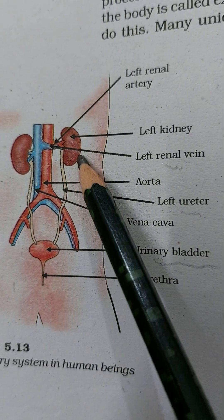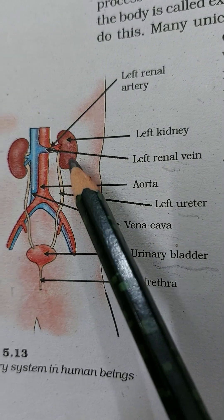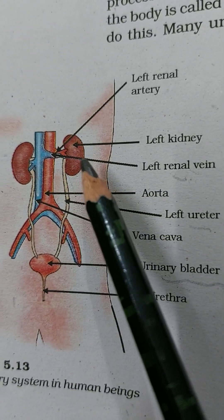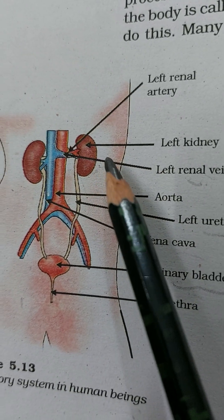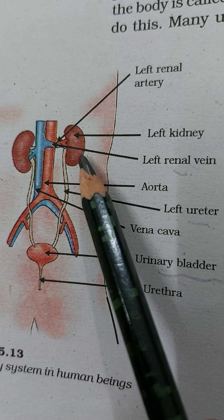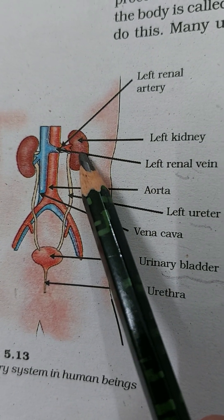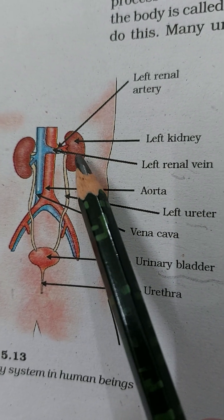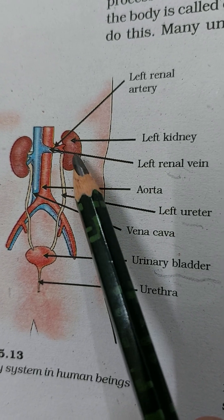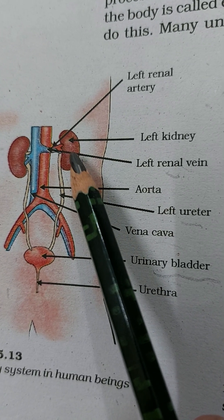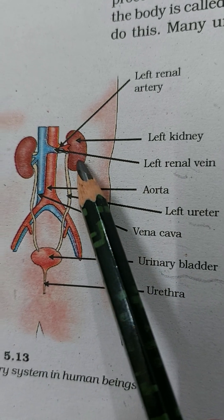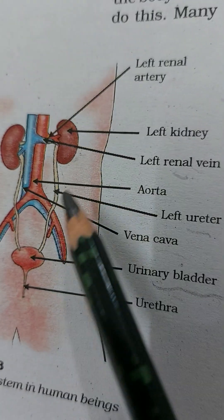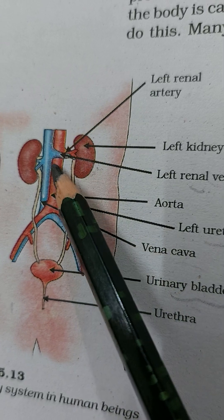What is the kidney's function? It is the removal of waste products. When we eat food and digestion occurs, nutrients are released into the blood. Blood transports oxygen, carbon dioxide, and nutrients, but it also carries nitrogenous waste products formed as a result of digestion. These nitrogenous waste products are brought to the kidney through the renal artery.